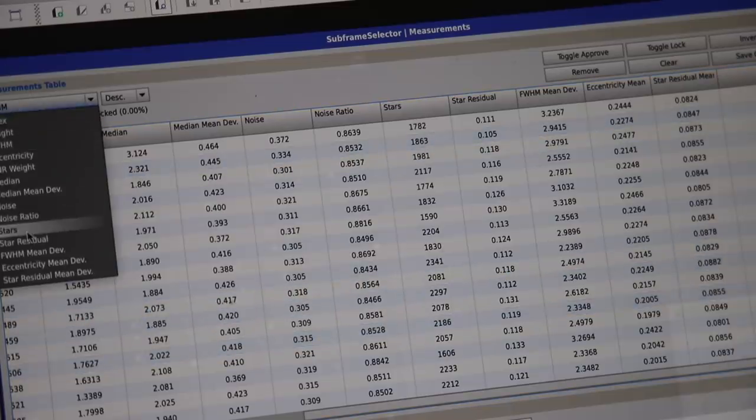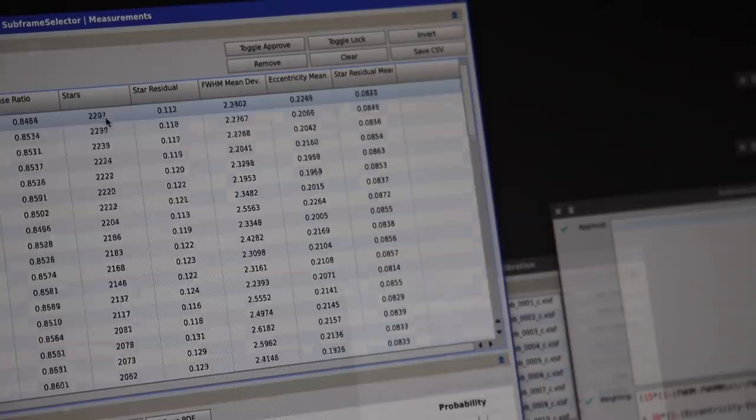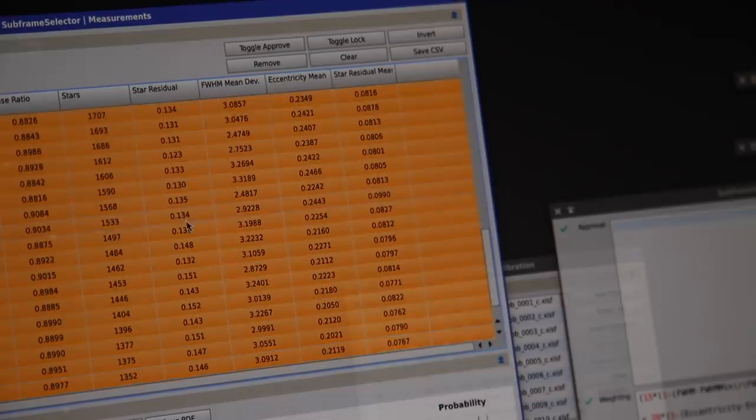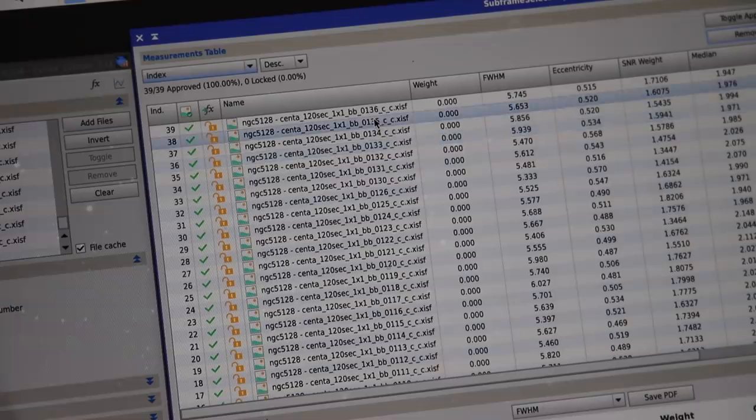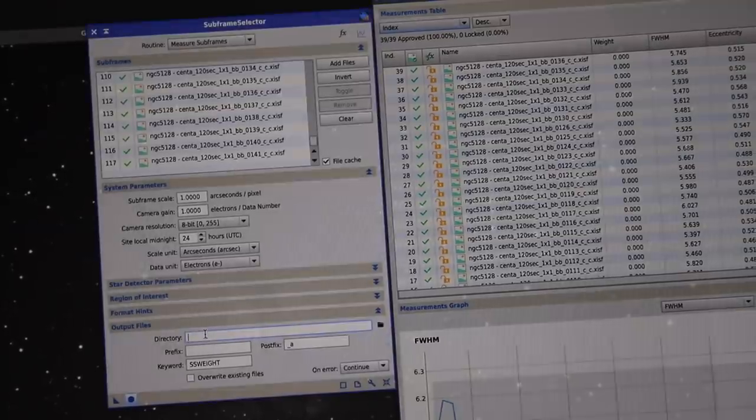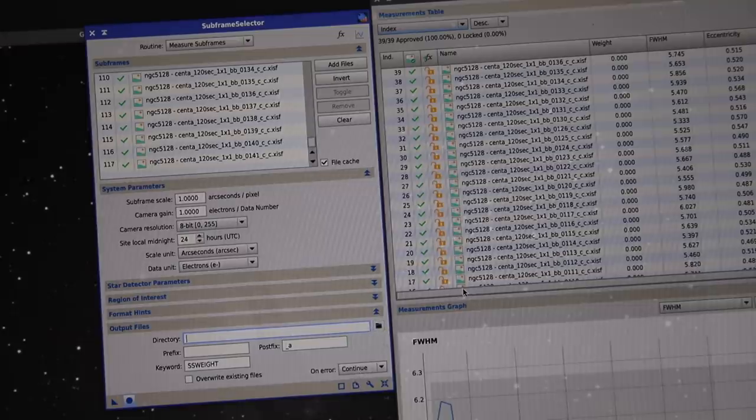So I'm going to apply a second reason to get rid of half of these frames and that's the stars column here. This allows you to see how many stars Pixi was able to count in every frame. I'm going to go over to the measurements table drop down here and change it to stars. Now this sorts them all by star count and go down to the bottom and I'm just going to select and click on remove.